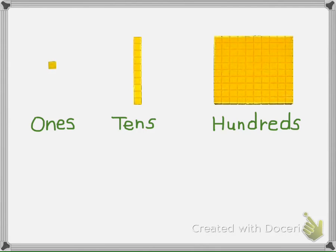Larger blocks are built using smaller blocks. The first three block types represent the first three place values, or digits, of whole numbers: ones, tens, and hundreds.